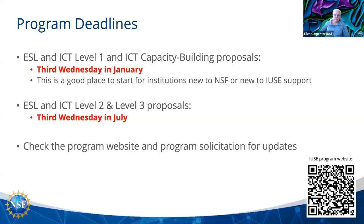The program has two deadlines a year. We receive level one and capacity building proposals in January — the deadline is always the third Wednesday in January, so the next deadline is January 17, 2024. The second deadline is the third Wednesday in July, for level two and level three proposals in both the Engaged Student Learning and Institutional and Community Transformation tracks. These deadlines do occasionally change, so always check the program website and solicitation for any updates.